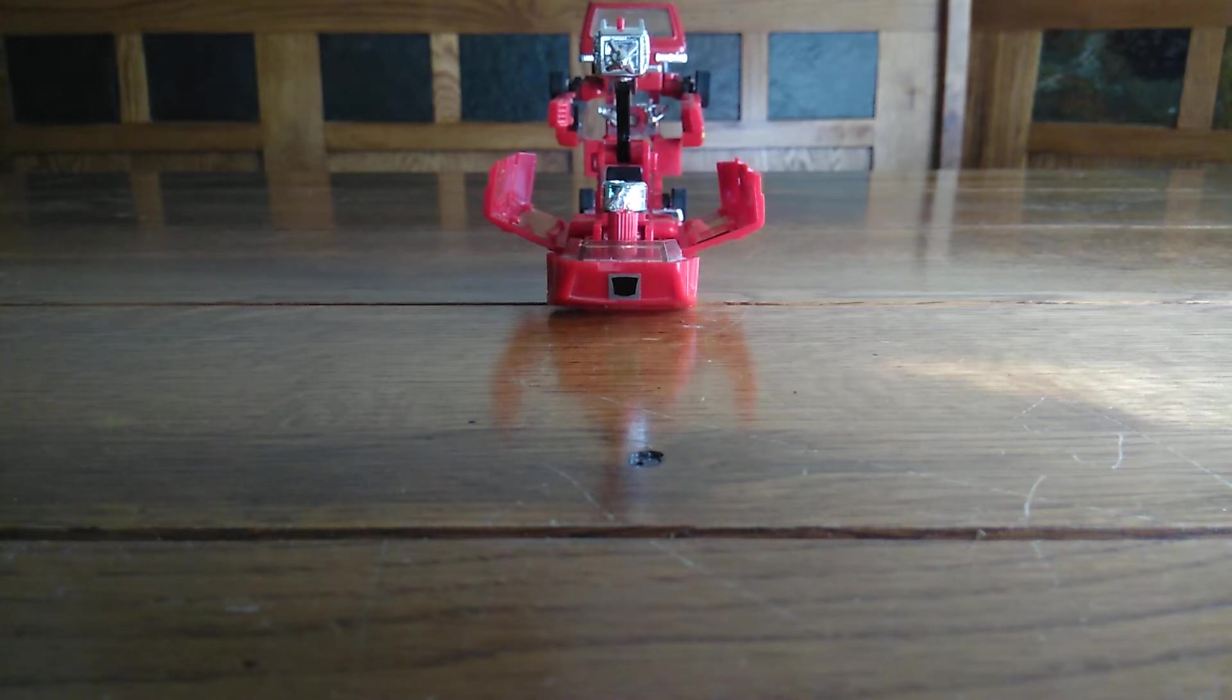Hello again, and welcome to G1 Transformers and More. Today we're going to be looking at a little guy named Ironhide. He is a VAM, and he is one of the first line of G1 Transformers in 1984 to come out.